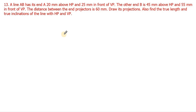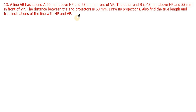In the previous video we saw a typical problem on projection of lines where the true length was given and we calculated the true inclination with HP and VP. But here the true length is not given — we have to calculate the true length and also the true inclination with HP and VP. For that, the end projector distance of 60 mm is given. Keeping this as a reference, we will calculate the true length and true inclination and proceed with the projection of lines.